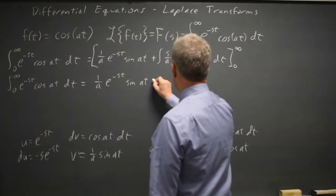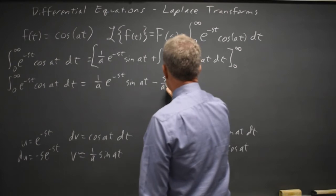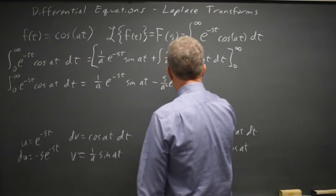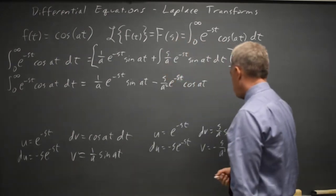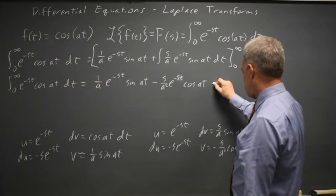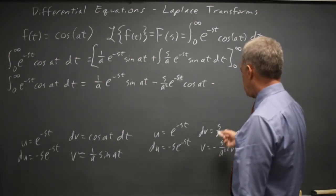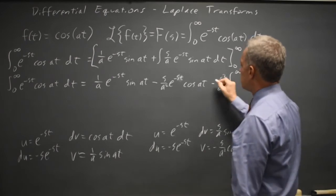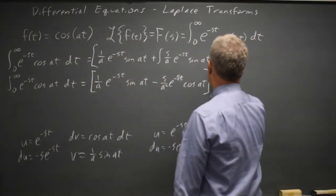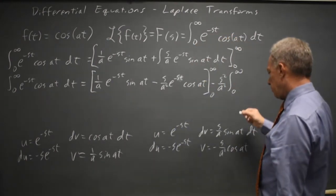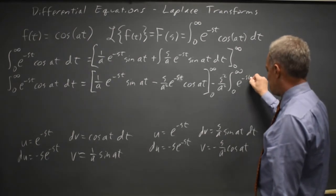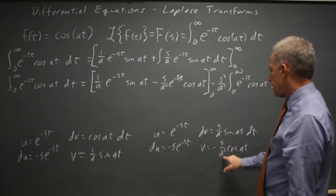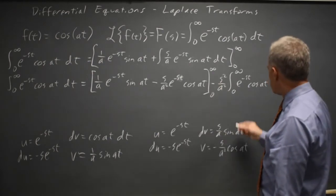So this is uv minus s over a squared e to negative s t, cosine a t, and then minus the integral of v du. Minus, minus, minus is minus the integral s squared over a squared times the integral zero to infinity. I'm going to put in my limits here now for the non-integral terms of e to negative s t, cosine a t. And I have my s squared over a squared. The negatives cancel, but there's another negative from the formula. And this is my original integral.